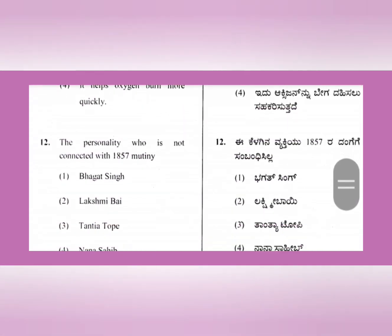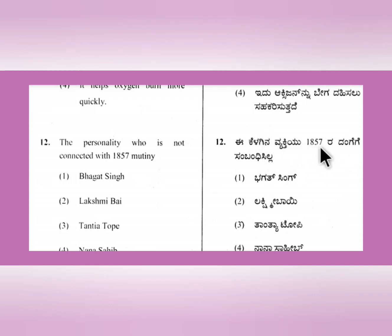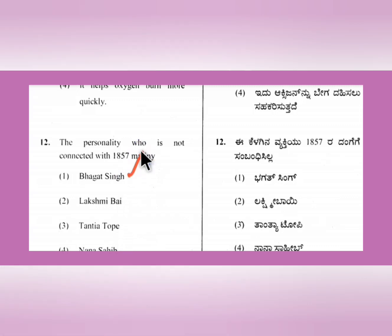Question 12: The personality not connected with the 1857 mutiny. Among the options - Lakshmi Bai, Tantia Tope, Nana Sahib - all were connected to the 1857 mutiny. Bhagat Singh alone was not involved in the 1857 mutiny; he came much later.